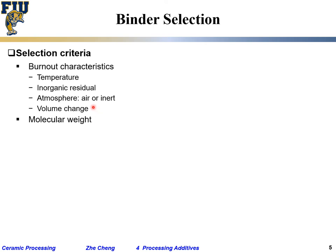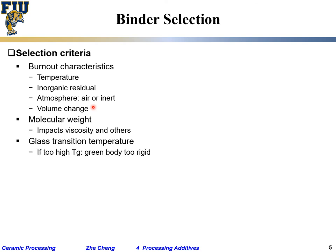Volume change is very important: you do not want a binder that causes too much volume change; you want it to decompose in a controlled fashion, not suddenly all become gas. Molecular weight impacts viscosity and other properties. Glass transition temperature (Tg): too high a Tg means the ceramic body is too rigid — at room temperature the polymer behaves like a glass and you lose plasticity.